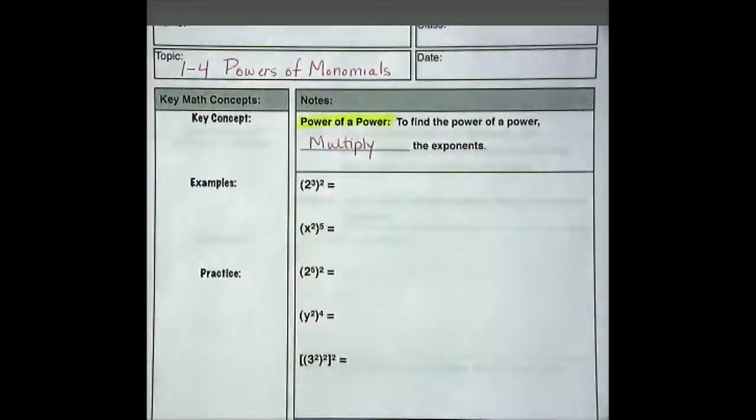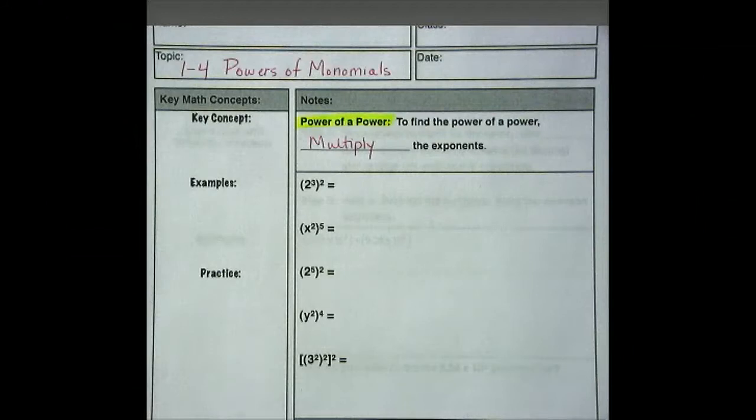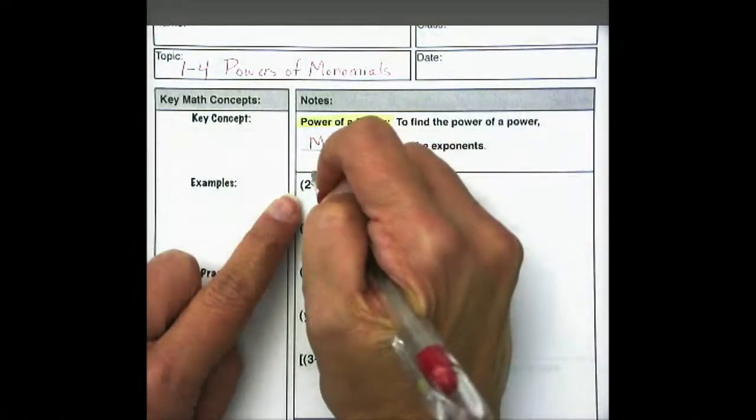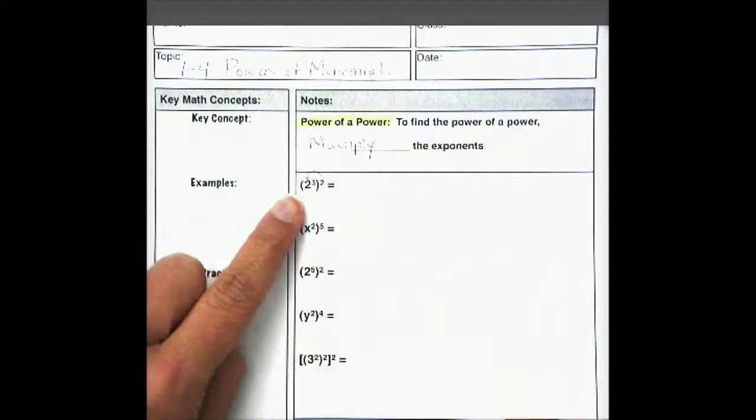Now this is going to be different than what we've done previously when we multiplied monomials. This time we're multiplying powers. So what we're going to do is we're going to take the exponent on the outside and multiply it by what's on the inside.